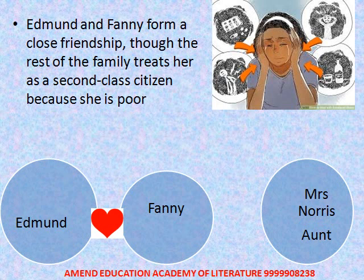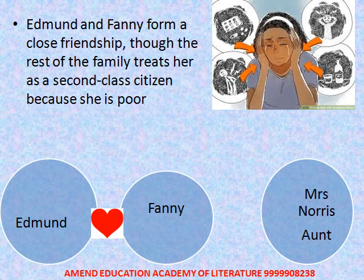Out of the four siblings in the family, Fanny is able to make a good relationship with Edmund. Edmund and Fanny form a close relationship, though the rest of the family treats her as a second-class citizen because she comes from a poor background and lacks the social manners of the Bertrams. Fanny's other aunt, Mrs. Norris, lives nearby and is verbally very abusive towards Fanny. Over time, Fanny begins to develop romantic feelings towards Edmund.